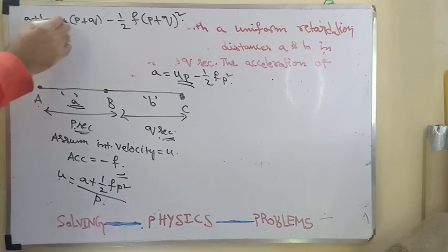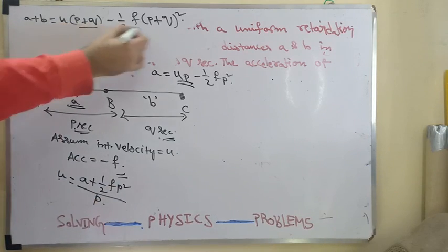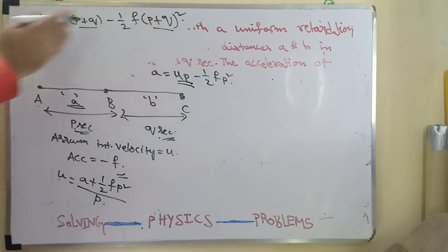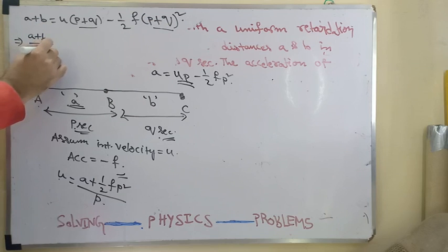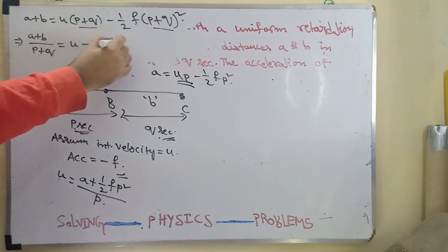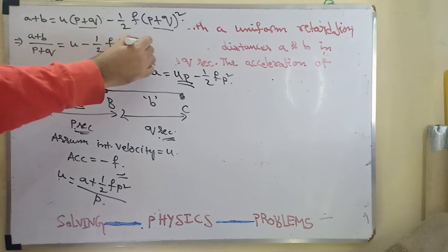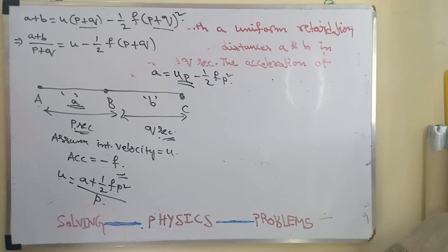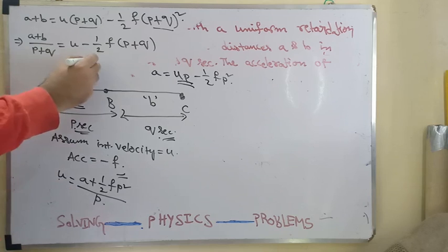This substitution we are going to do here. From these two terms, we can take P plus Q as common and send it to this side. So we can divide with P plus Q on either side. We get A plus B divided by P plus Q is equal to U minus half F into P plus Q.